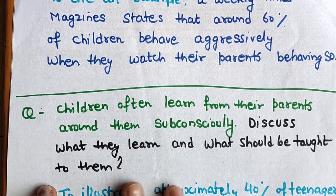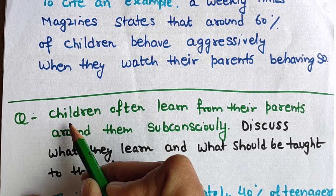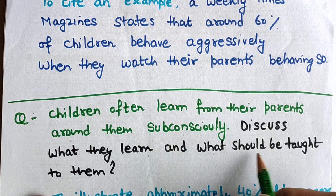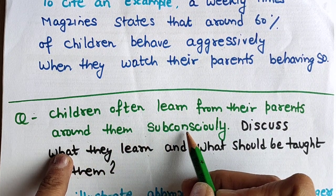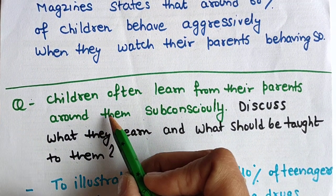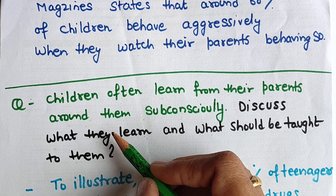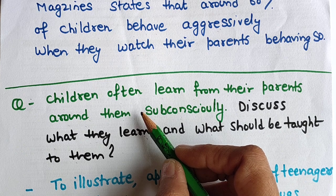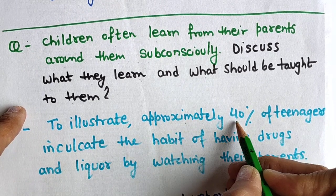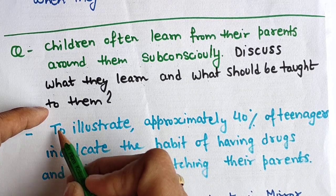Now I will show a question statement and then discuss how to apply examples to it. The question is: 'Children often learn from their parents around them subconsciously. Discuss what they learn and what should be taught to them.' I read the question statement two or three times to understand the main topic. For this question, an example could be: 'To illustrate, approximately 40 percent of teenagers...'